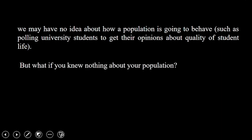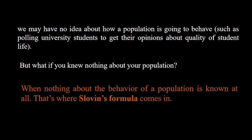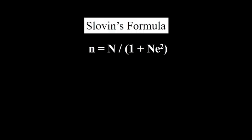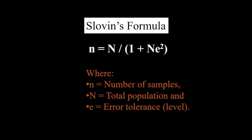But what if you knew nothing about your population? When nothing about the behavior of a population is known at all, that's where Slovin's formula comes in. In Slovin's formula: n equals the number of samples, N equals the total population, and e equals error tolerance.